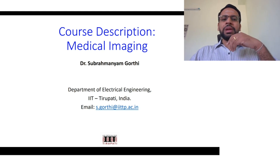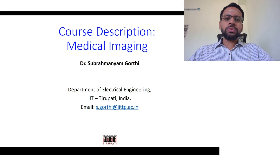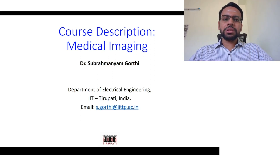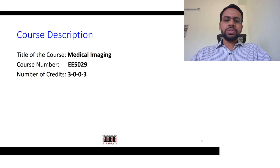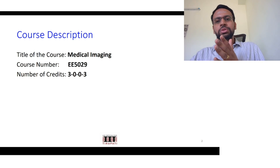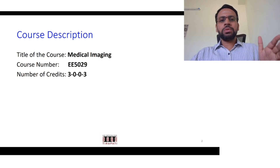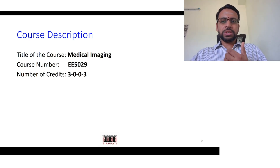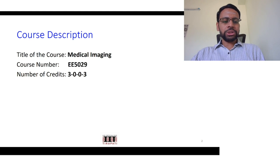In this video lecture, I would explain what you can expect from this course, what background is required, how the evaluation would be, what reference books we use, and what the content will be. At our institute, the course number is EE5029, and the title is Medical Imaging. It covers both image processing primarily and also various medical imaging modalities. This is a three-credit course, meaning three hours of lectures per week.